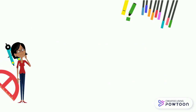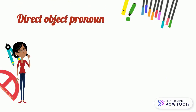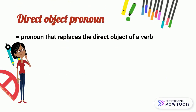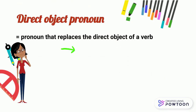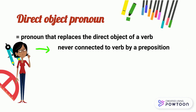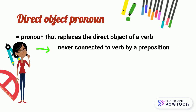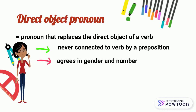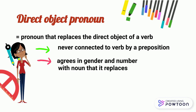In a nutshell, the direct object pronoun is a pronoun that replaces the direct object of a verb. It is never connected to the verb by a preposition and, like any pronoun, it agrees in gender and number with the noun that it replaces.